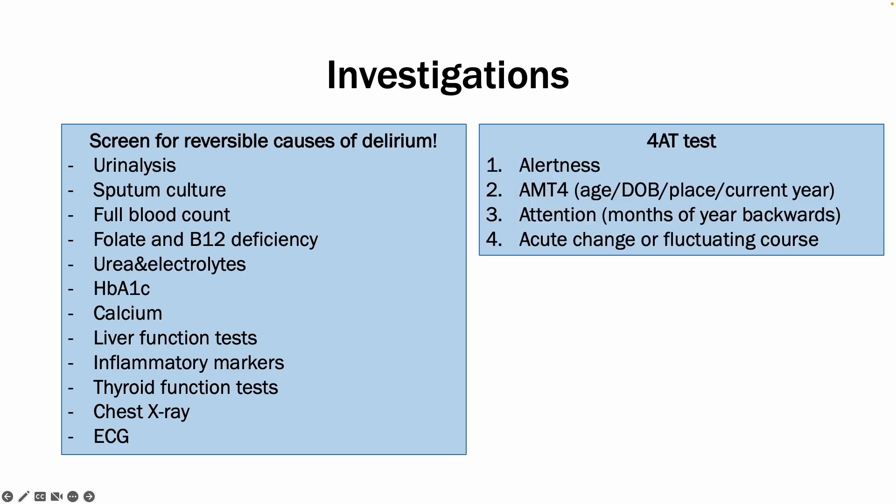Clinically, the 4AT test is very often used. It is a short test that takes about three to five minutes and consists of four components. The first is alertness — you assess whether the patient is fully with it, whether they are agitated, or whether they are very sleepy. The second part is the AMT4, which stands for age, date of birth, place — where they currently are — and the current year.